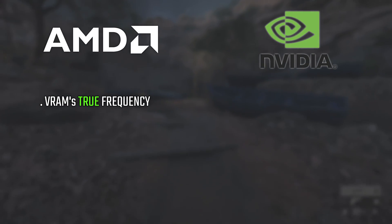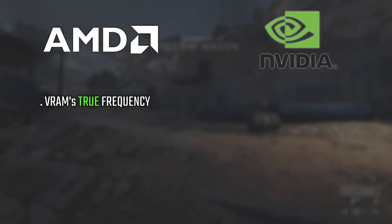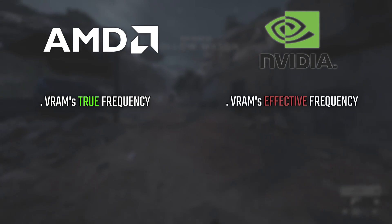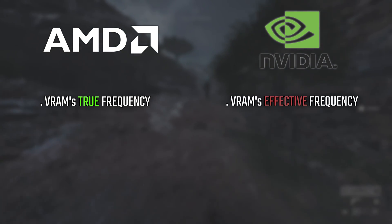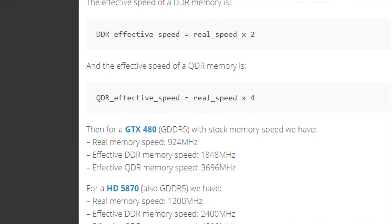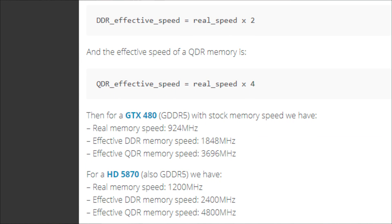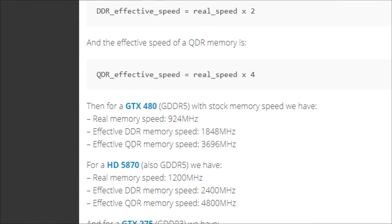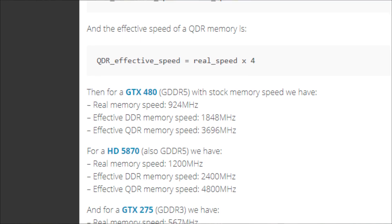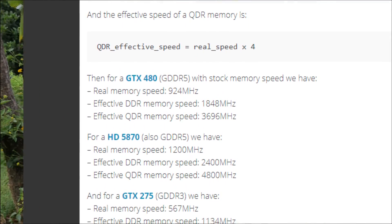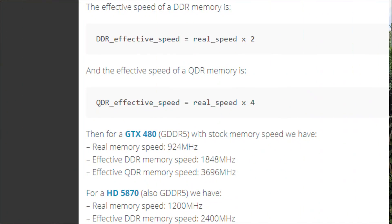Basically we need to understand two things. First, we have the VRAM true frequency, which is what AMD presents, and then we have the effective frequency — or effective clock — which is what Nvidia presents. The effective clock has to do with the type of VRAM: whether it's dual-rate DDR or QDR (quad data rate). GDDR6 and GDDR5, despite their names, are actually quad-rate.